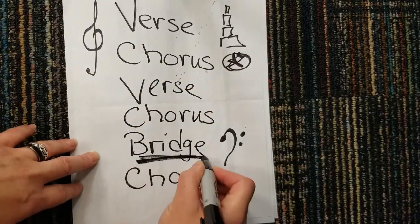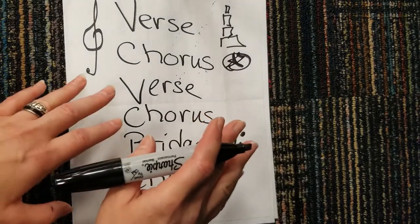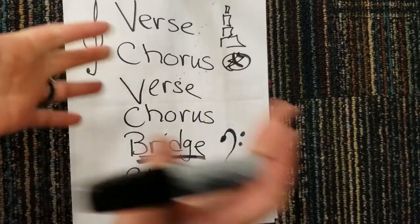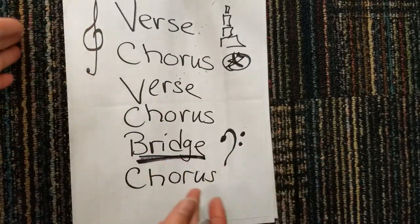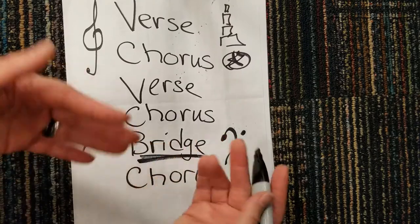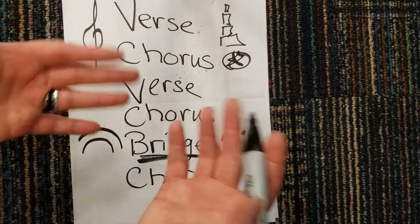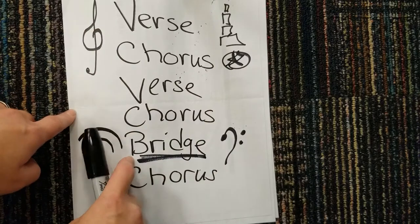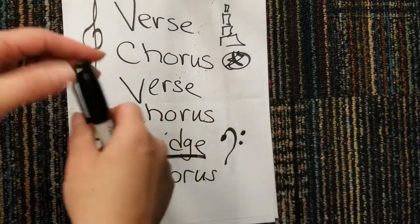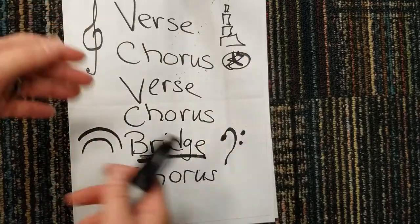The bridge is the thing that takes a left turn melodically, rhythmically, lyrically, and or emotionally from the rest of the song. So it kind of brings it all together, and oftentimes it can also give us a little bit more information or a different perspective than what the rest of the song is saying.